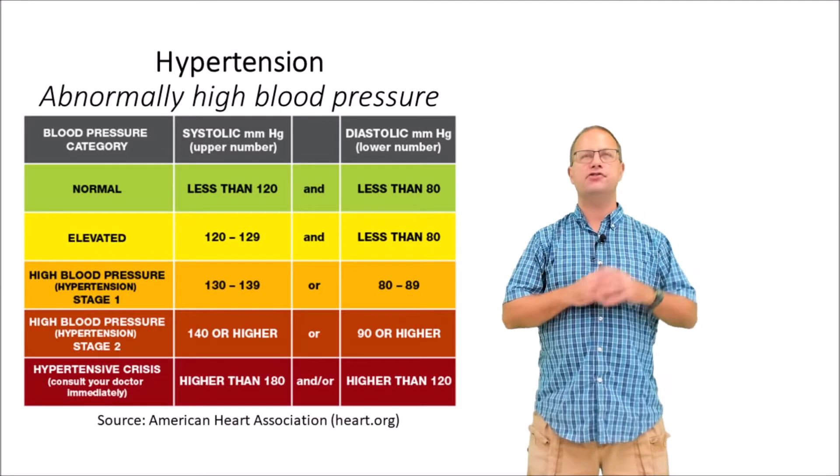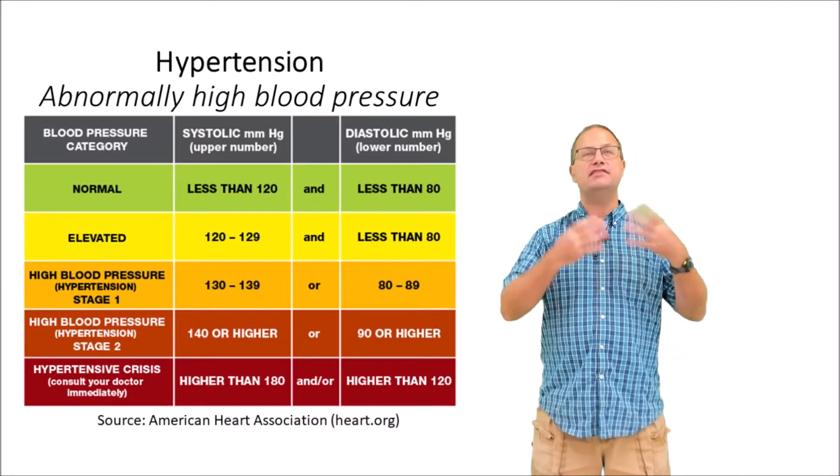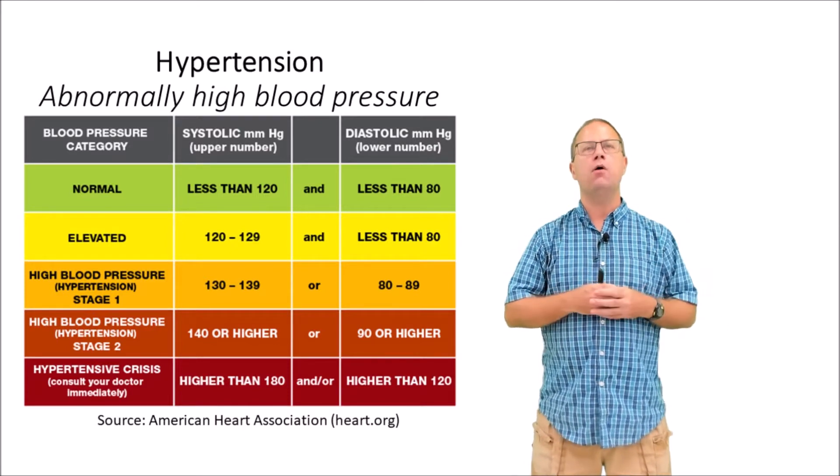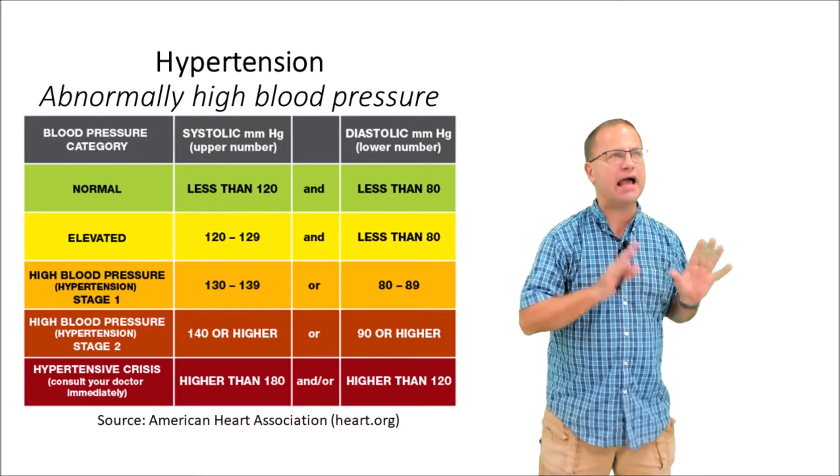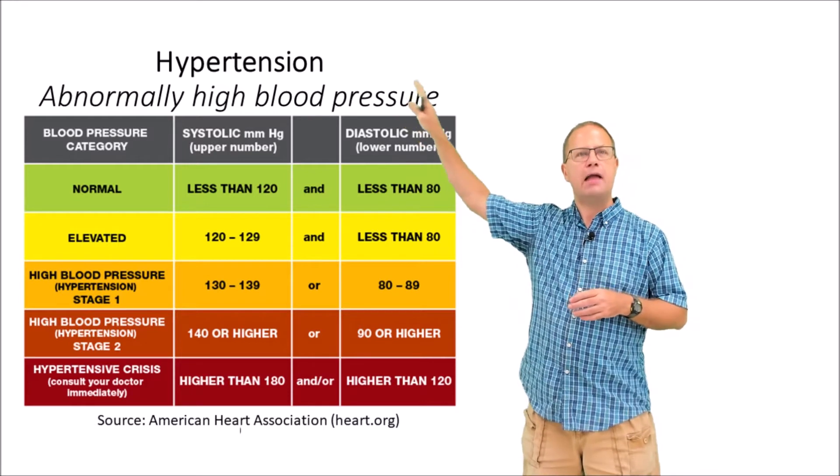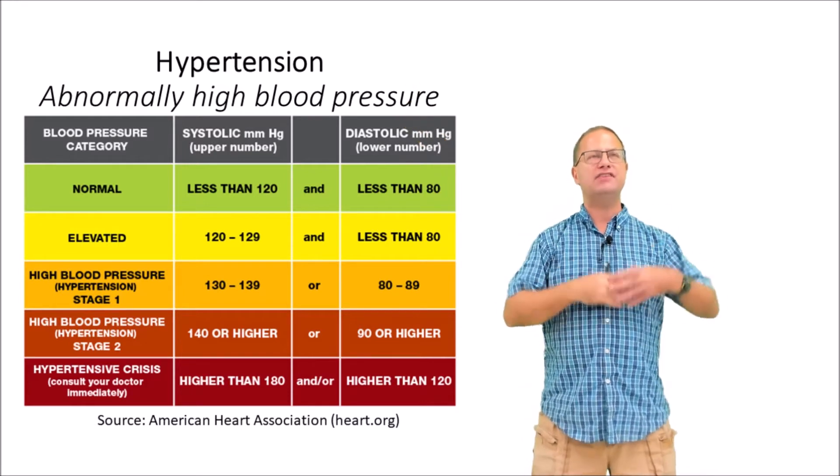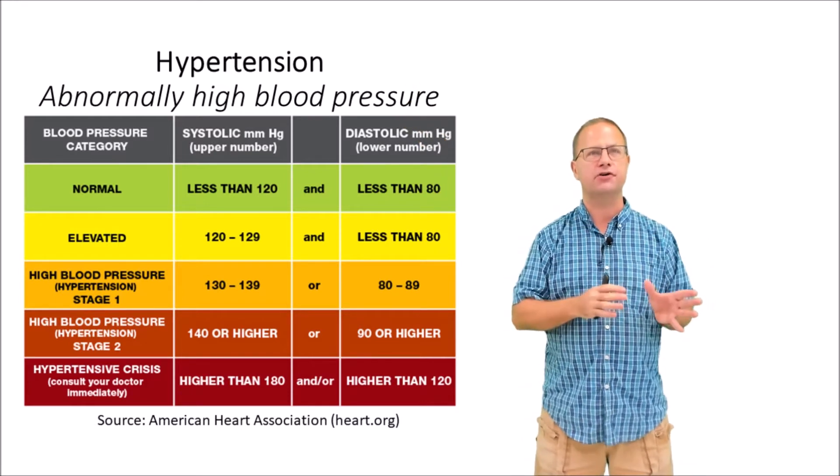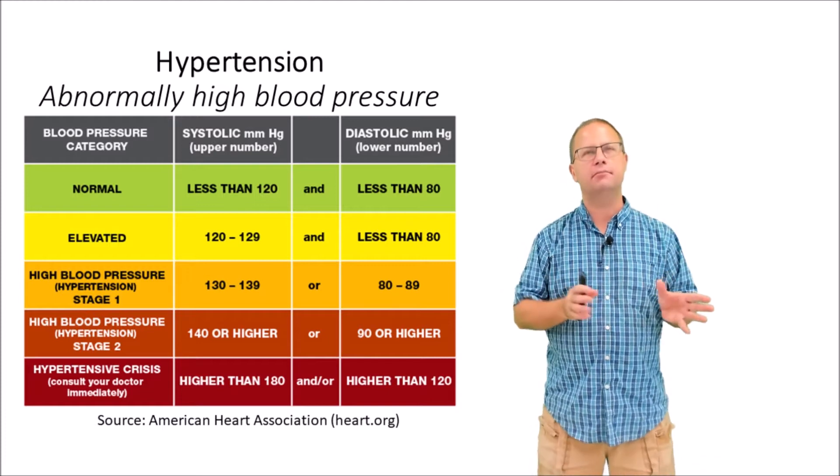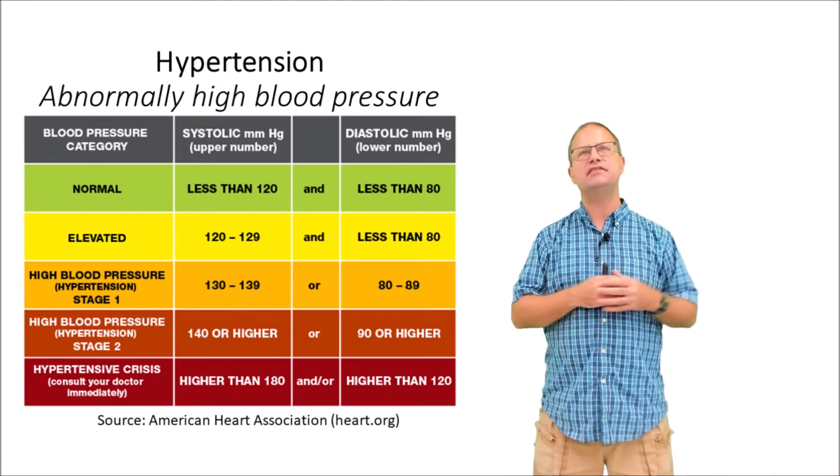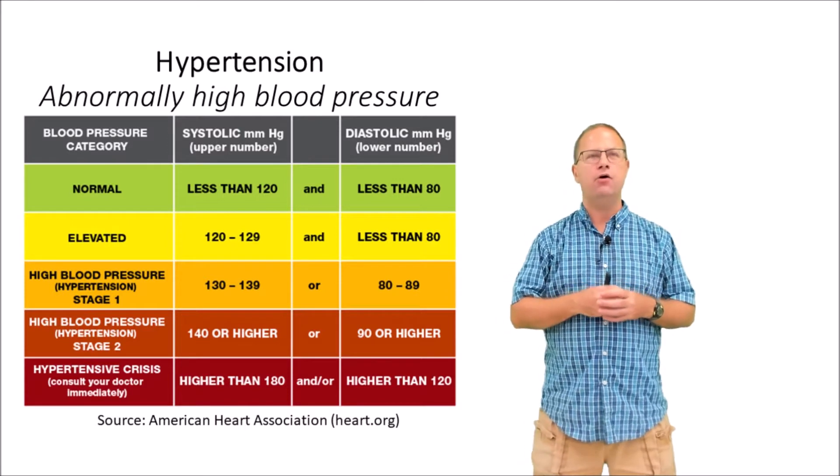With systolic blood pressure and diastolic blood pressure, we can sometimes have pressure that is too low or too high. If the pressure is abnormally high, we say that person is hypertensive. Hypertension is greater than normal blood pressure, and it used to be that a normal blood pressure was 120 over 80, or 120 systolic over 80 diastolic.